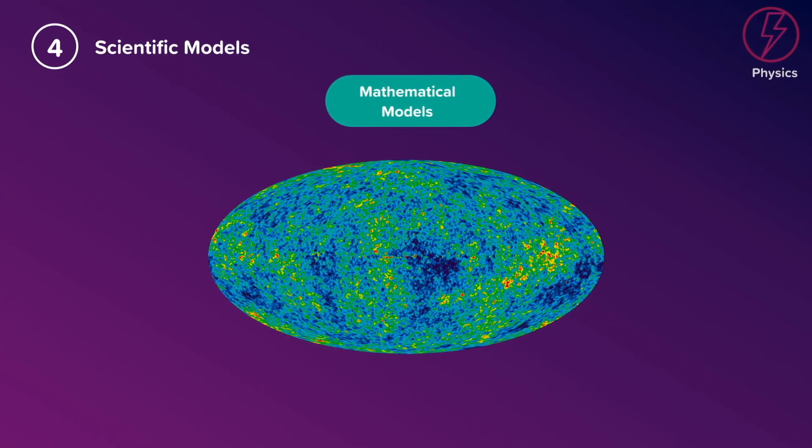Mathematical models help us describe, calculate and predict the behaviour of components in a system. There are lots of equations you have to know for science and they help us predict the behaviour of objects.